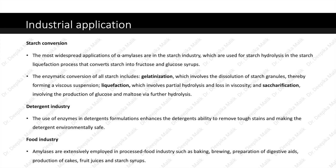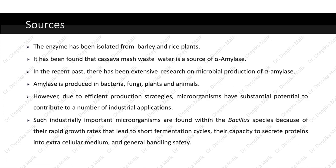In the food industry, amylases are extensively employed in processed food industries such as baking, brewing, preparation of digestive aids, production of cakes, fruit juices and starch syrups. The enzyme has been isolated from barley and rice plants. Cassava mash wastewater has also been found to be a source of alpha amylase. In the recent past, there has been extensive research on microbial production of alpha amylase. Amylase is produced in bacteria, fungi, plants and animals; however, due to efficient production strategies, microorganisms have substantial potential to contribute to a number of industrial applications.